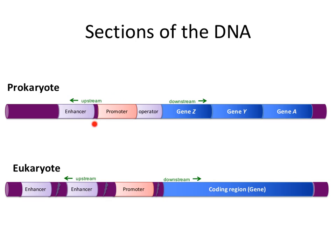A common feature is that both prokaryotes and eukaryotes have a promoter region, although the location of this promoter region will be different. In prokaryotes it is usually very close to the coding region, compared to eukaryotes where it can actually be in multiple places — sometimes very far away from the coding region, and in some cases even embedded inside the coding region. So in eukaryotes there is a lot of variation for where this promoter is located.